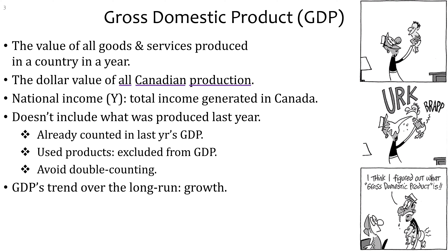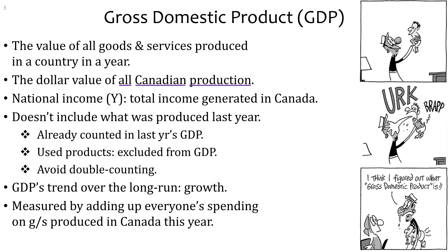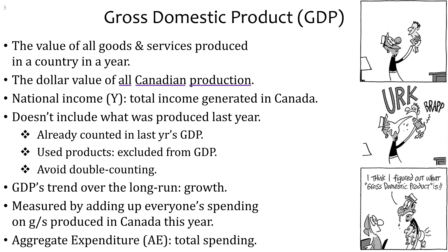GDP's trend over the long run is called growth. If you look at a country's GDP over the last 10, 15, or 20 years, that would be the growth. GDP is measured by adding up everyone's spending on goods and services produced in Canada this year — that's called aggregate expenditure, or AE. Aggregate expenditure is the same as total spending: aggregate means total, and expenditure means spending. Make sure to write down the symbols Y and AE.